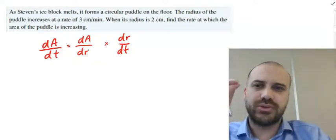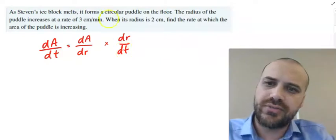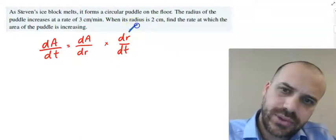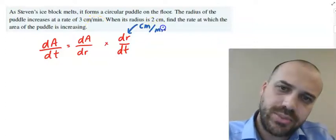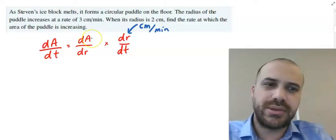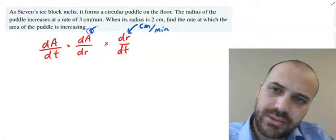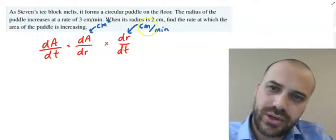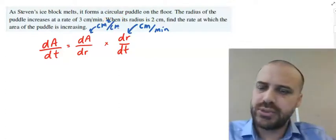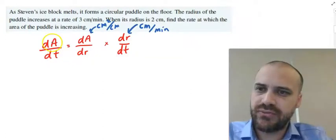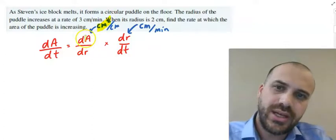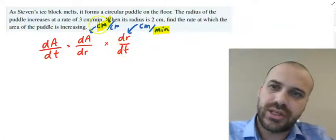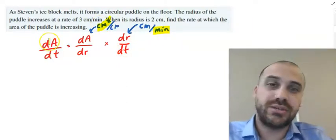In the previous example I said I'd explain how to figure out the units, and that's by looking at the units of each piece. Radius is measured in centimetres and time is measured in minutes, so dr/dt is in centimetres per minute. Area is measured in centimetres squared since radius is in centimetres, so dA/dr is centimetres squared per centimetre. For dA/dt, we take the numerator unit from the area term and the denominator unit from the time term, giving centimetres squared per minute.